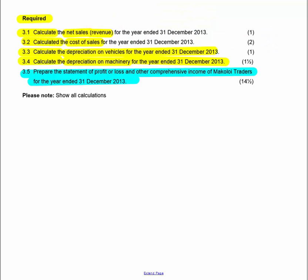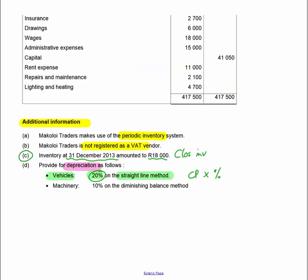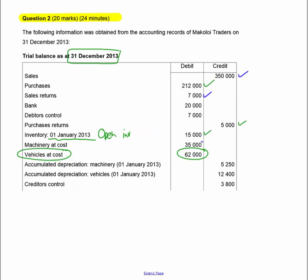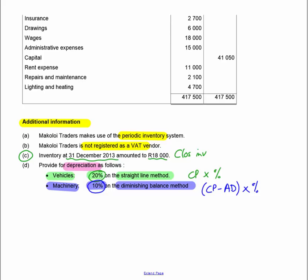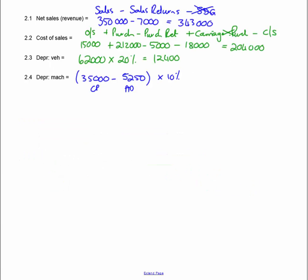Depreciation on machinery is 10% on the diminishing balance method — take the cost price, subtract the accumulated depreciation, then multiply by 10%. Cost price of machinery minus accumulated depreciation, multiplied by 10%, gives depreciation of R2,975. You must distinguish between the straight line and diminishing balance methods.